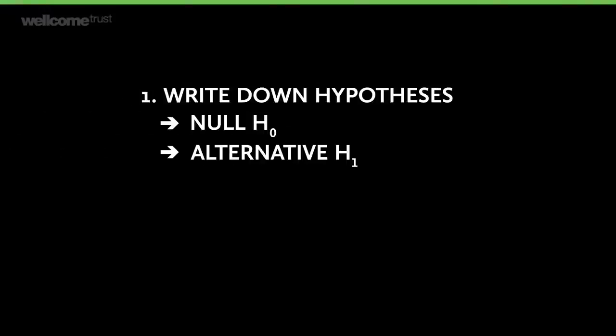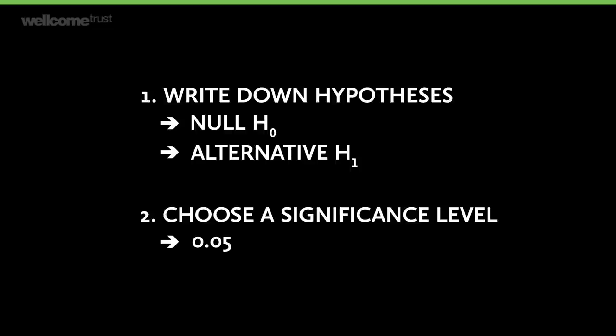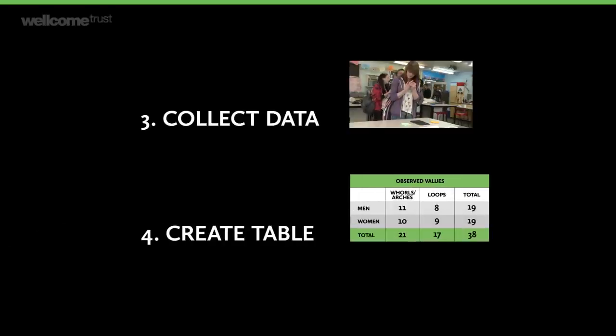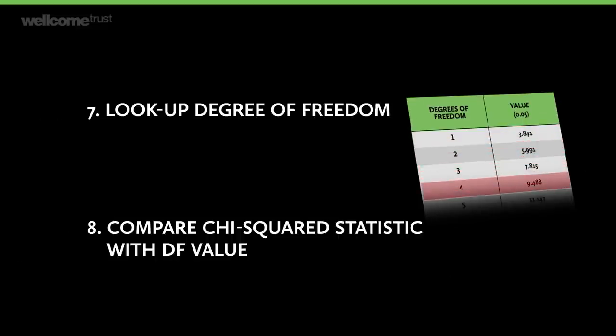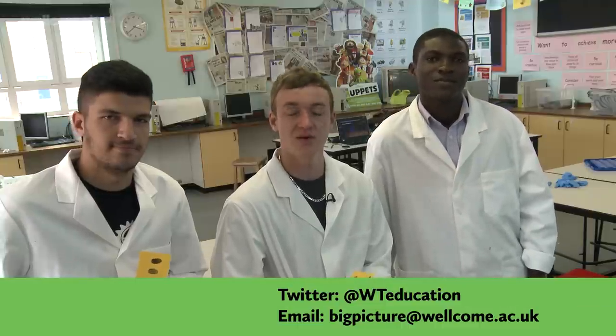To recap, here are the steps required for a chi-squared test: write down your hypotheses and choose a significance level of 0.05 unless you have a good reason not to; collect your data and collate them into a contingency table; work out the expected value for each cell and use the formula to calculate the chi-squared statistic; find the right table for your number of degrees of freedom and compare your statistic to the appropriate critical value; finally, decide whether to reject or accept the null hypothesis and write down your conclusion. Try it yourself and let us know how you get on — you can learn more or download free resources at welcome.ac.uk/bigpicture.